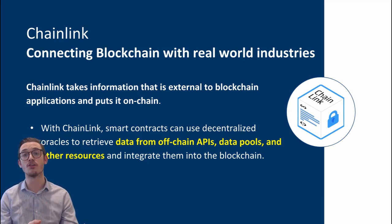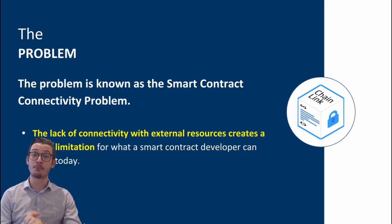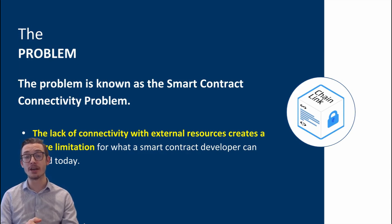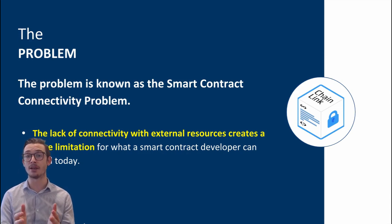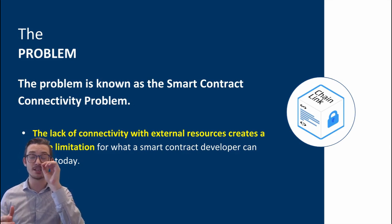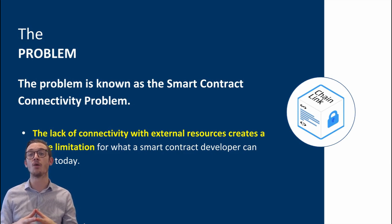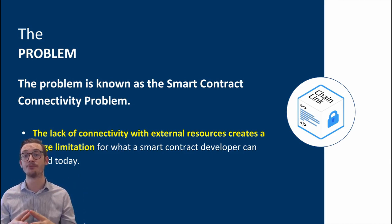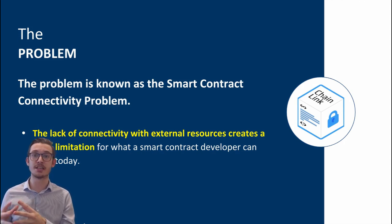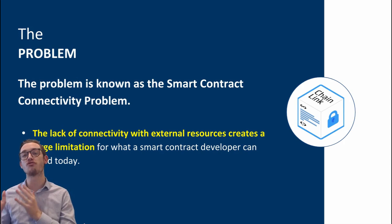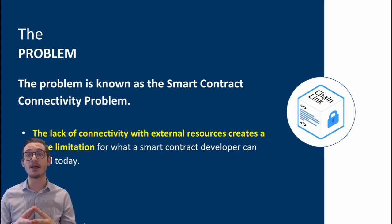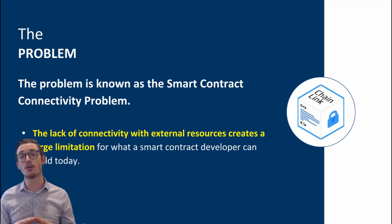The problem Chainlink is looking to solve is known as the smart contract connectivity problem. There's a lack of connectivity with external resources, which creates a large limitation for developers building real world applications. For example, if you're building a dapp that's a sports book — say for horse racing — you need external data feeds to give you race results. Can you trust those external data feeds? That's where oracles come in.